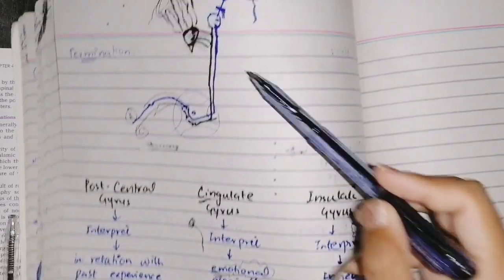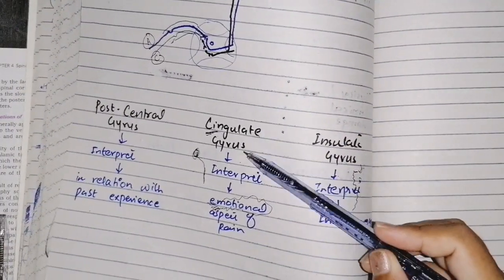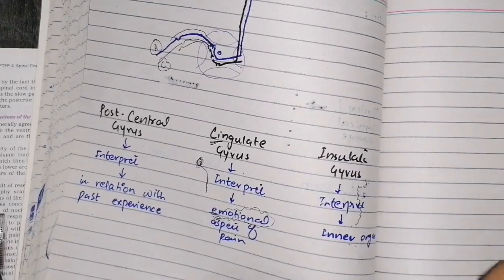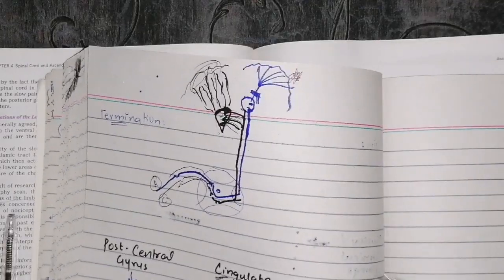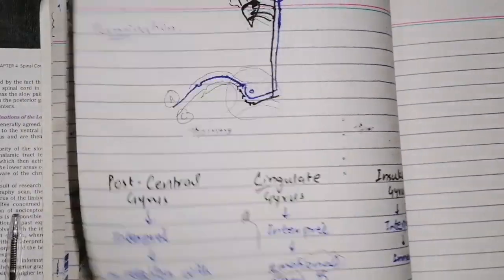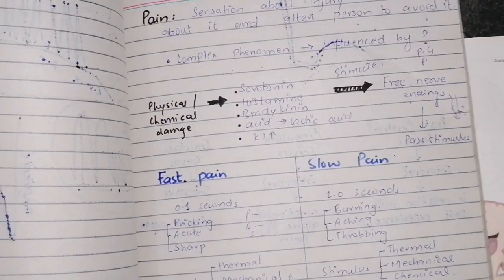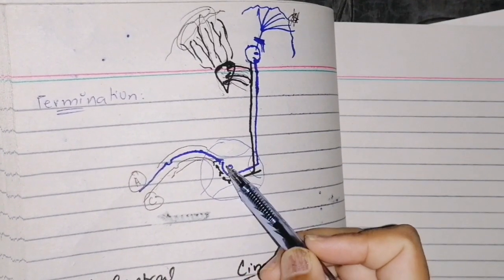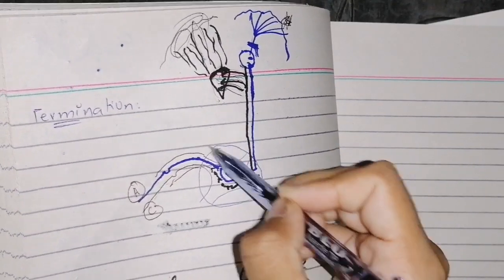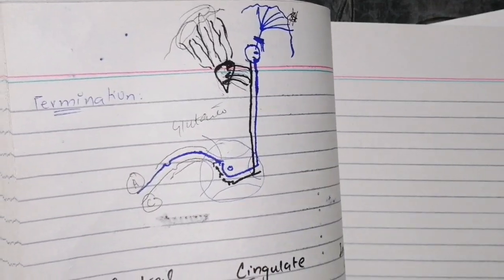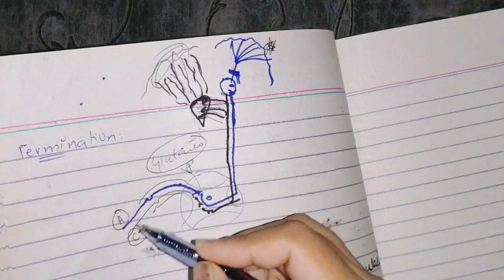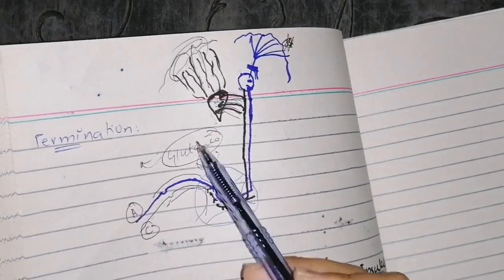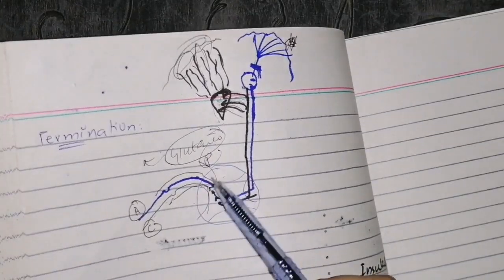So these are the three cortical termination points: if it is the emotional aspect of pain, the cingulate gyrus interprets it; if it relates to past experiences, the post-central gyrus interprets it; and if it comes from the inner organs, the insular gyrus generates an autonomic response. Besides this, there are two theories — gating theory and analgesia. One important point: at the synapse between first and second order neurons, two neurotransmitters are released — glutamate, which is fast-acting and localized, and neuropeptide substance P, which is slow-acting and diffuses to affect neighboring neurons.